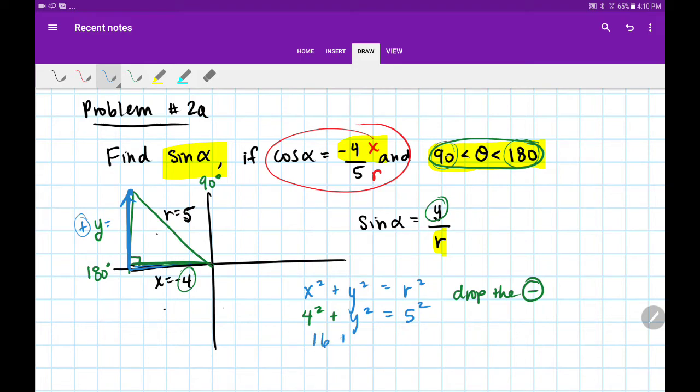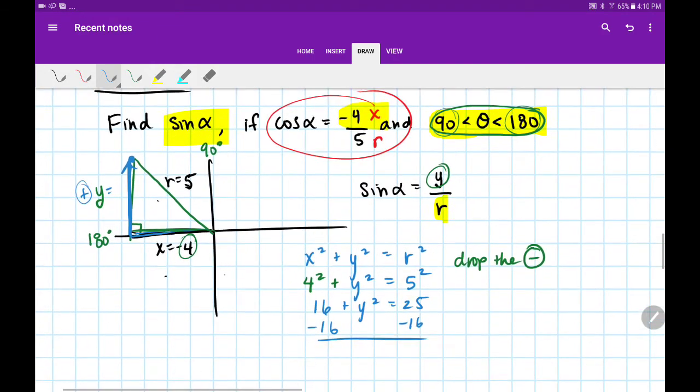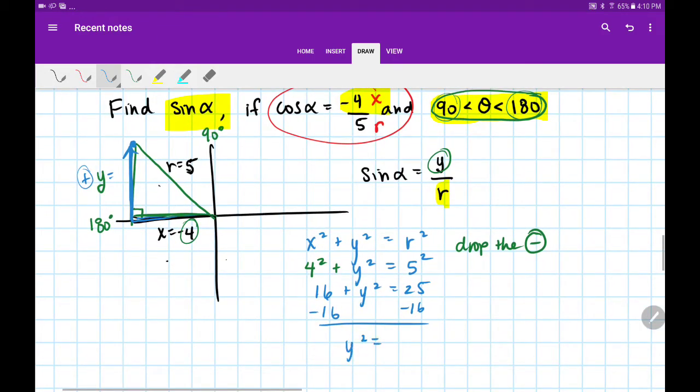Solving for y, we'll get 16 + y² = 25. Minus 16 on both sides to get y² = 9. In our final step, we'll take the square root of both sides. So y = 3.